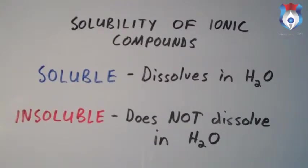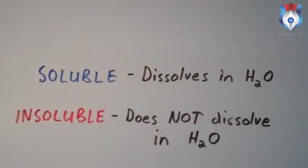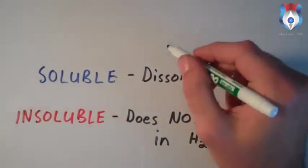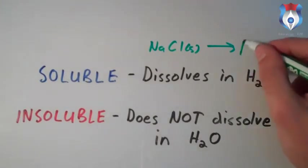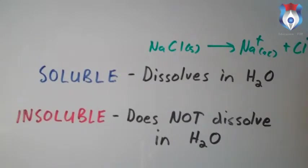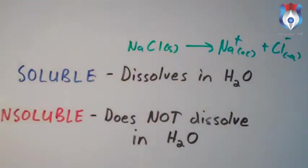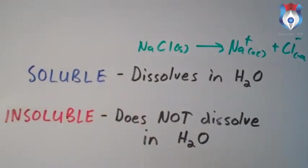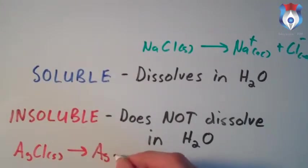Now let's talk about the solubility of ionic compounds. The main question is: will the ionic compound dissolve in water or won't it? A soluble ionic compound is one that dissolves in water, while an insoluble ionic compound does not dissolve. For example, sodium chloride (NaCl) is soluble — dissolving it in water gives sodium ion (aqueous) and chloride ion (aqueous). Silver chloride (AgCl), however, is insoluble — putting it in water yields no dissolution.